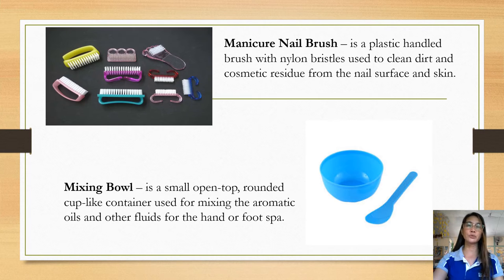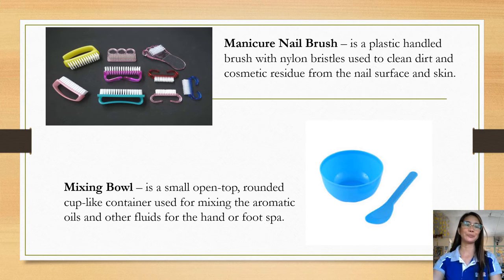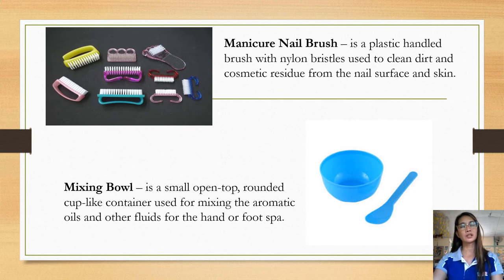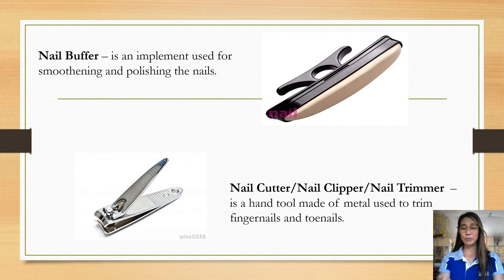The manicure nail brush is a plastic-handle brush with nylon bristles used to clean dirt and cosmetic residue from the nail surface and skin. The mixing bowl is a small open-top rounded container used for mixing aromatic oils and other products for hand or foot spa — it belongs to tools, not materials.